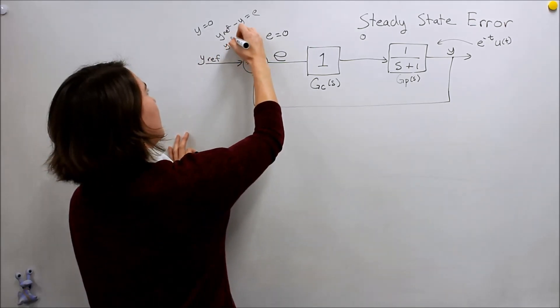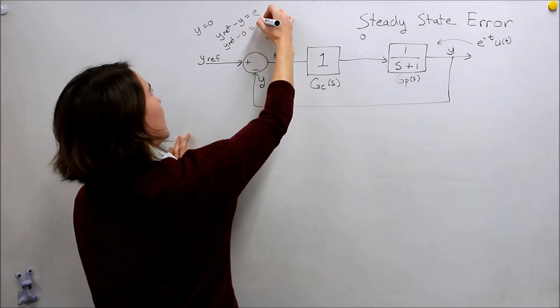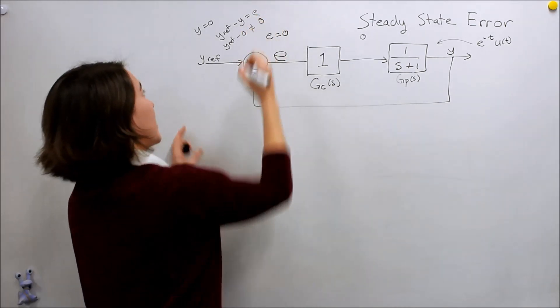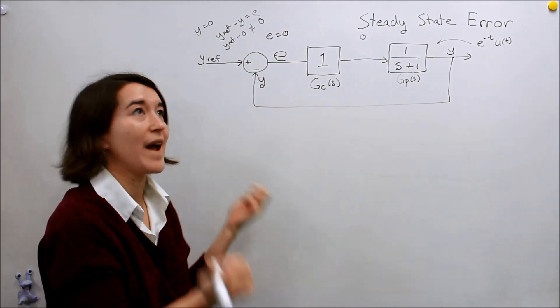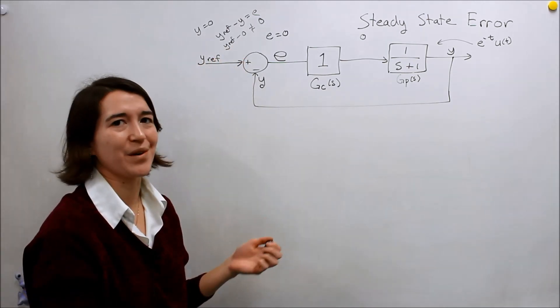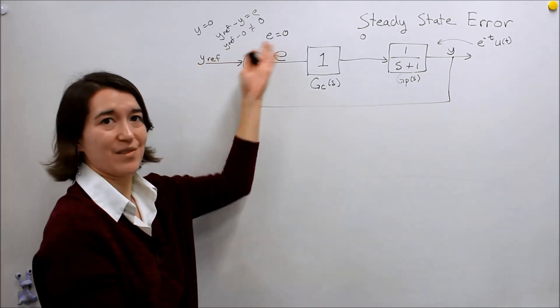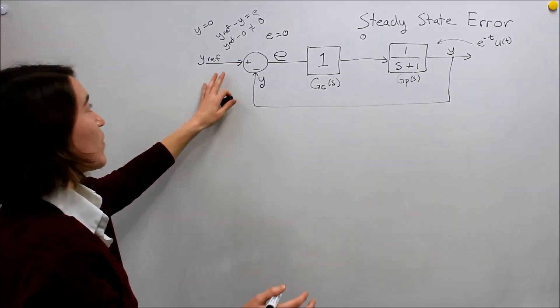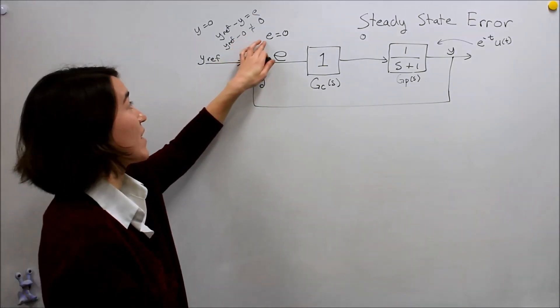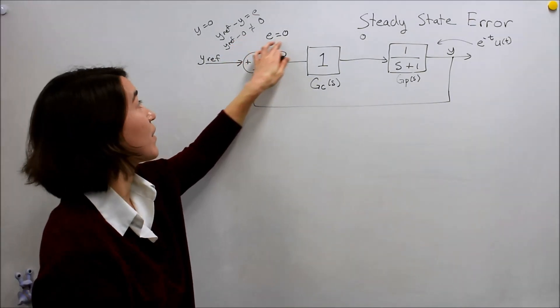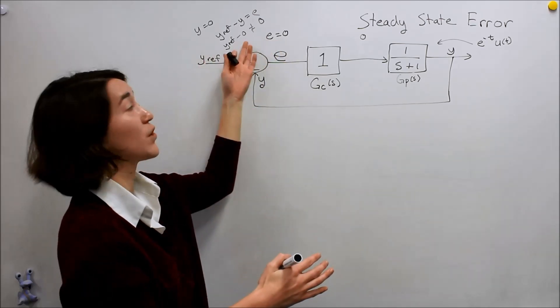y_ref minus zero is not equal to zero because y_ref, we choose that value, and only if we choose it to be zero would this equation be satisfied. We have a problem in that there has to be a different value of the error that will satisfy this full equation.